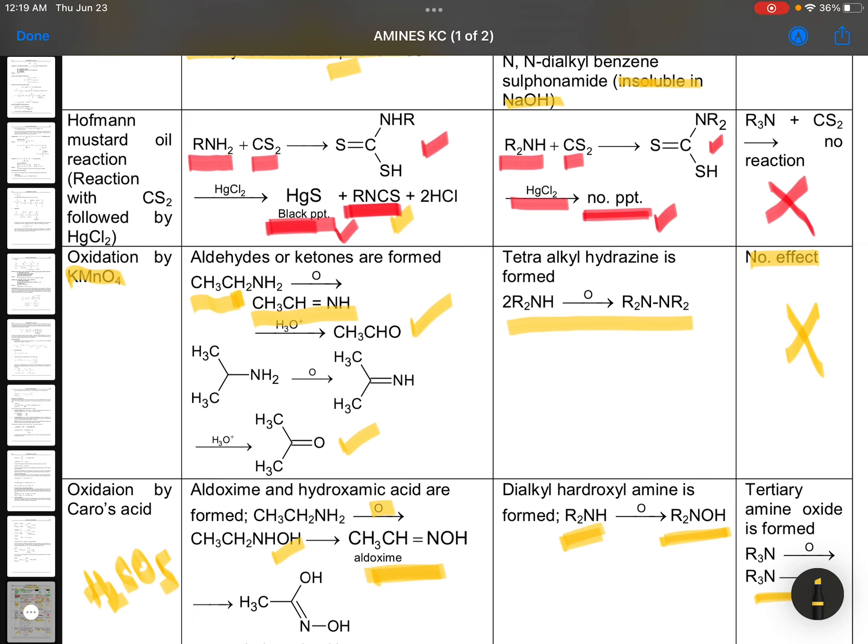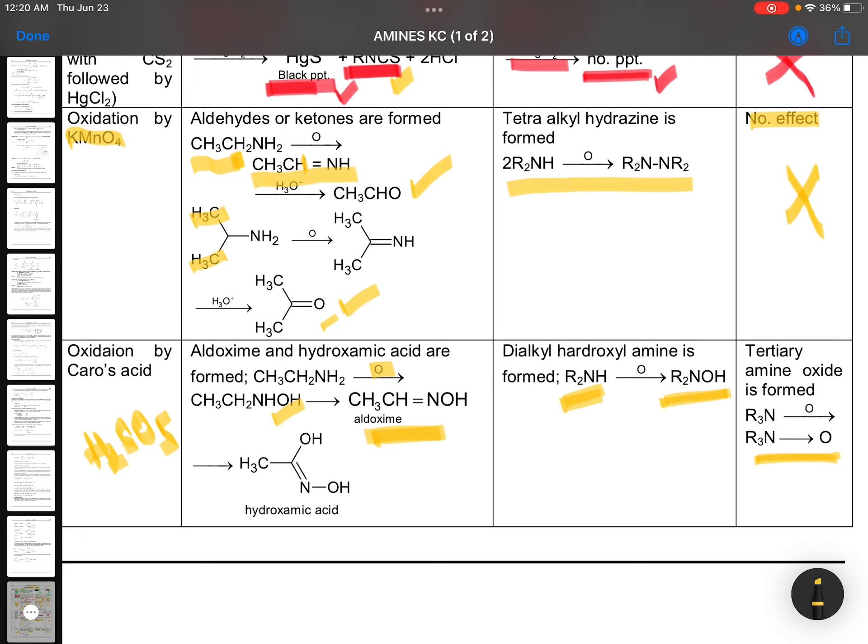Oxidation by KMnO4, if you see, aldehydes and ketones are formed. Depending on number of hydrogens it is having. Double bond carbon, if it is having at least one hydrogen, that will be converted to aldehydes. If both are alkyl groups like this, you see. Alkyl group, alkyl group. That will be converted to ketone. Here at least one hydrogen is there, so you are getting the aldehydes. And the secondary answer, you can see tetraalkyl hydrazine is formed. No effect in the last case. Oxidation by Caro's acid. Aldoxime and hydroxamic acids are formed. You can check this one.